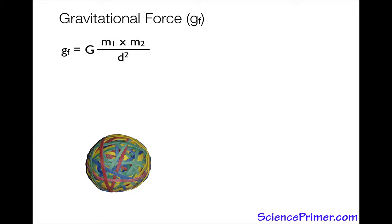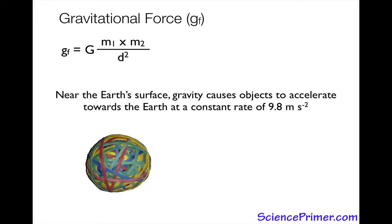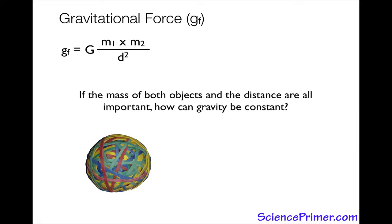So you can see it's an equation that has three different variables, and gravitational force will change depending upon the values placed into this equation. But the other thing we all learn is that near the Earth's surface, gravity causes objects to accelerate towards the Earth at a constant rate of 9.8 meters per second squared. So in this sense, gravity is a constant, not a variable force. So the question becomes, how do we jive these two statements?